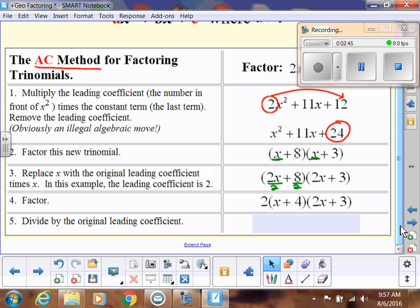Our last step is to divide by the original leading coefficient, which was 2. When I say divide by 2, I'm dividing the whole thing by 2, not each single factor. This cancels with that first one, and that's it. I don't divide the 4 by 2 or 2x + 3 by 2. It's just one and done. This would be the correct factor version of that original trinomial.